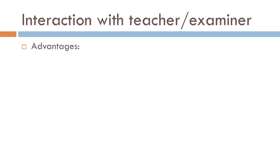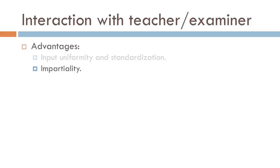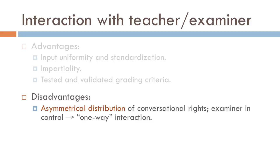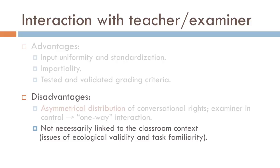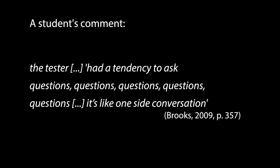What are some advantages of the interaction with a teacher-examiner? The input is uniform and fairly standard — everybody gets the same thing more or less — therefore it's an impartial test, and the criteria for standardized tests of this kind have been tested and validated. On the other hand, conversational rights are distributed asymmetrically. The examiner is in control, so it's a one-way interaction with the examiner basically doing most of the work — constantly prompting the student. The other disadvantage is that it's not necessarily linked to the classroom context, so there might be an issue of ecological validity and task familiarity, in the sense that students are not used to interacting one-on-one with their teacher in an interview format. Students do perceive the asymmetric nature of this type of interaction guided by the teacher-examiner's questions.